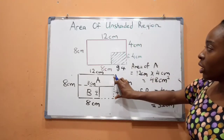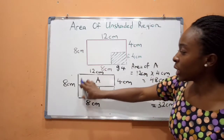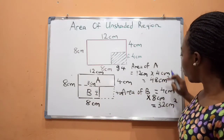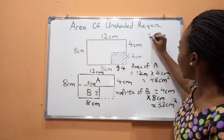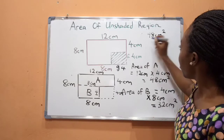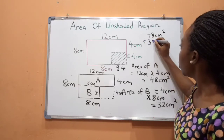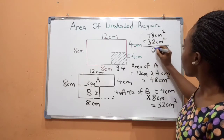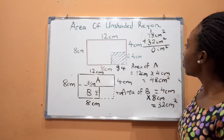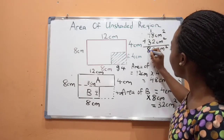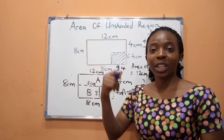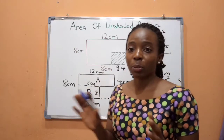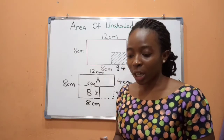To find the area of the entire unshaded part using this method, we simply add the area of A to the area of B: 48 cm² plus 32 cm² gives us 80 cm² — the exact same answer we got using the first method. So you can use either method and arrive at the same answer.